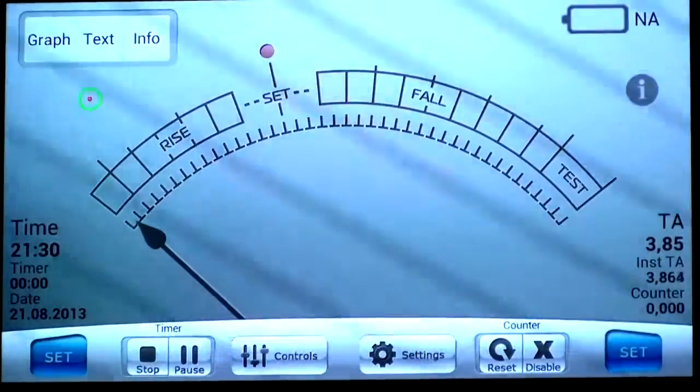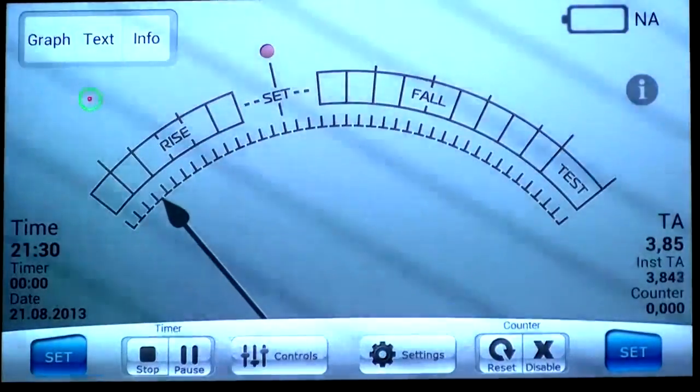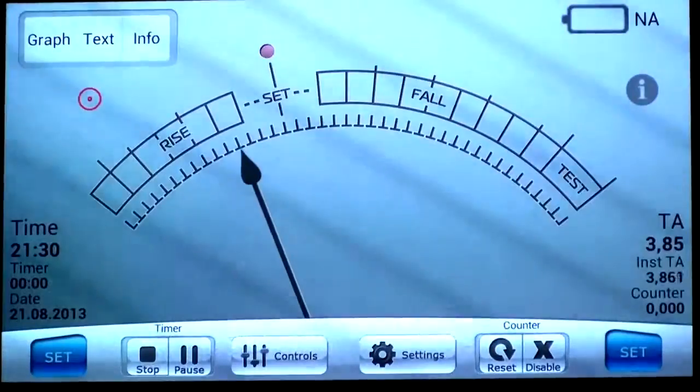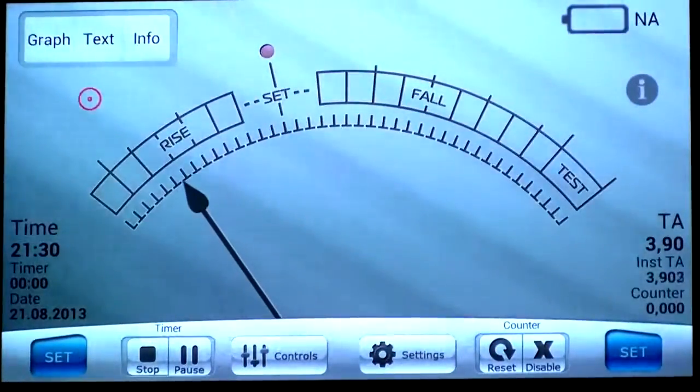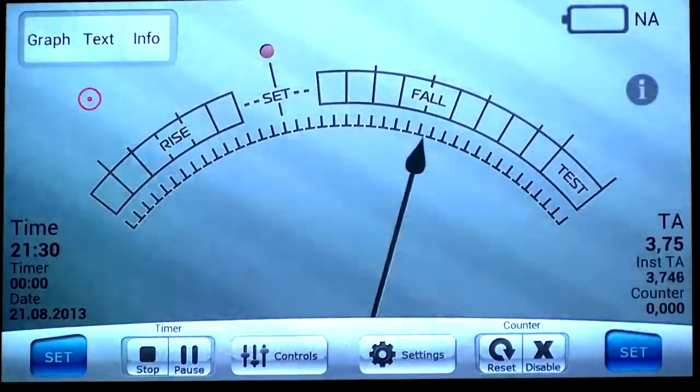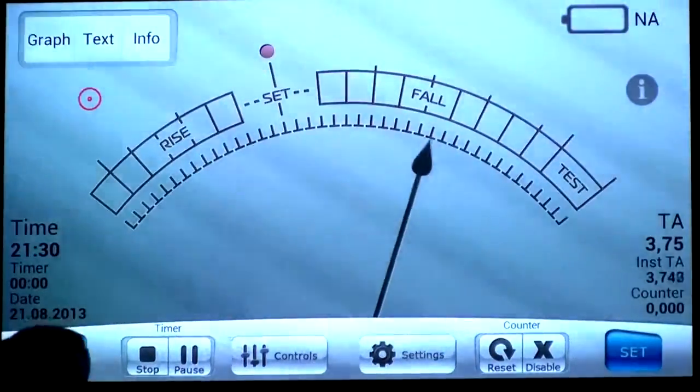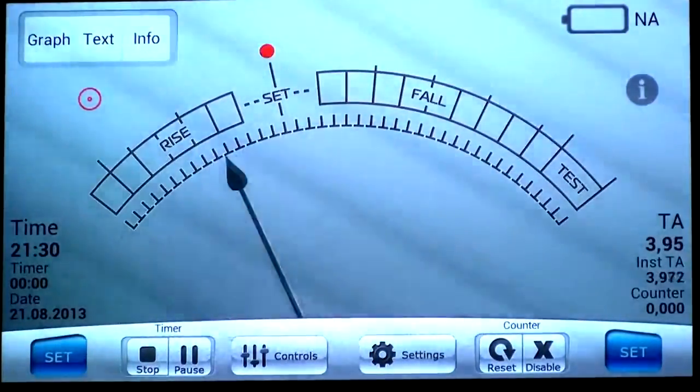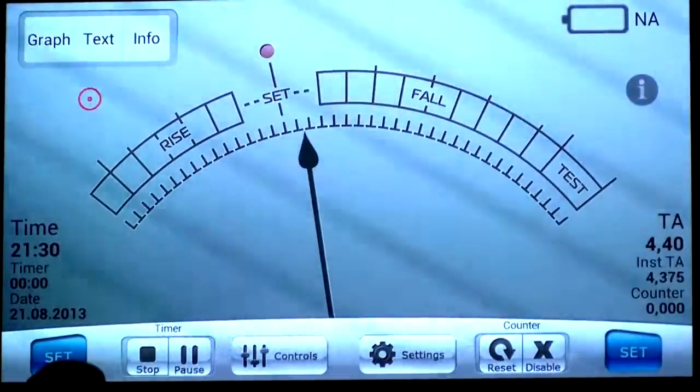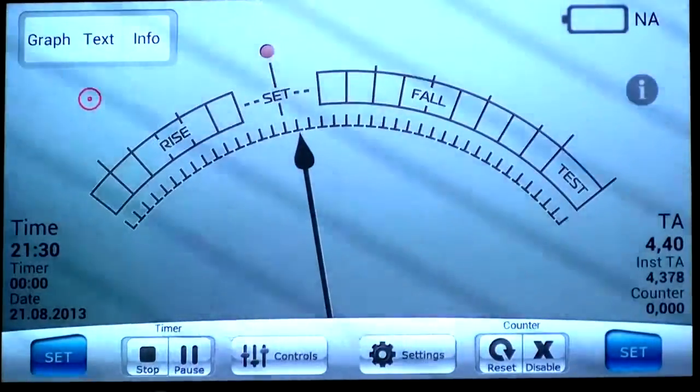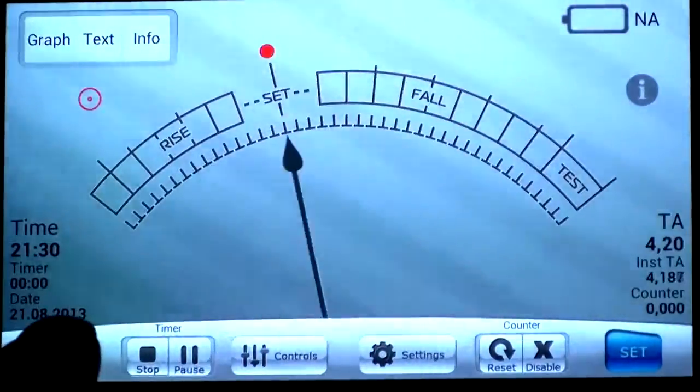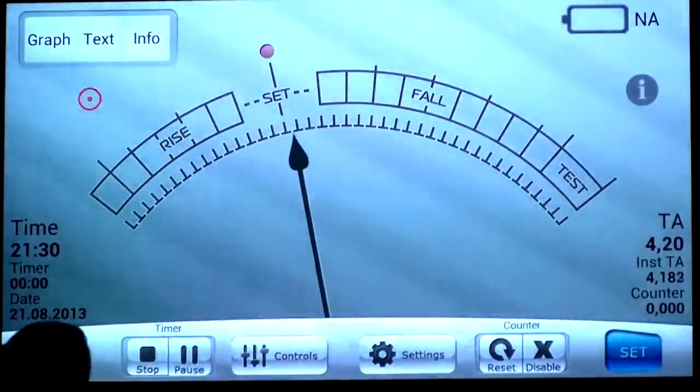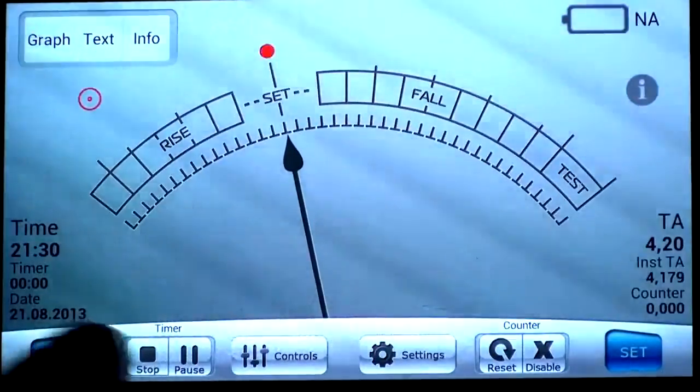Now I press the start button to start the session. The counter and TA counter start to work. As you see, there was a body motion, and the red circle indicates that the TA counter doesn't count. Now it will turn green. This means that the TA counter will start to work.